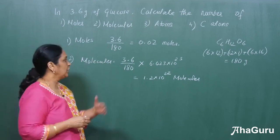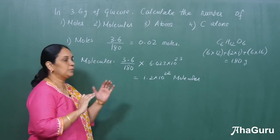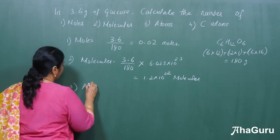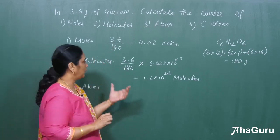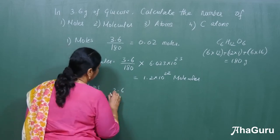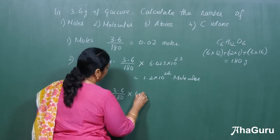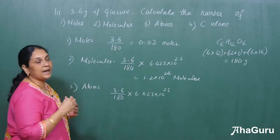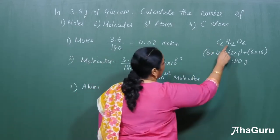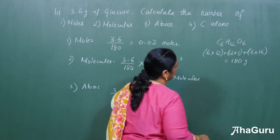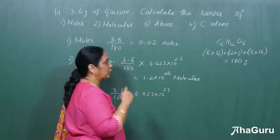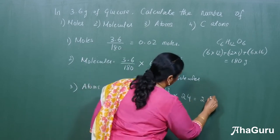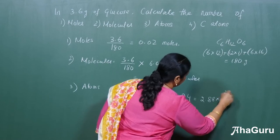The third calculation is the number of atoms. The first two steps are the same: 3.6 divided by 180 multiplied by Avogadro's number 6.023 × 10²³. Then we also multiply by the total number of atoms in one glucose molecule — there are 6 carbon, 12 hydrogen, and 6 oxygen atoms, giving 24 atoms total. So multiplying by 24 gives 2.88 × 10²³ atoms.